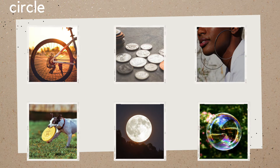Here we see a bicycle wheel, coins, hoop earrings, a frisbee, the moon, and a bubble. These are all circles.